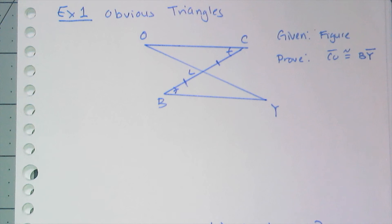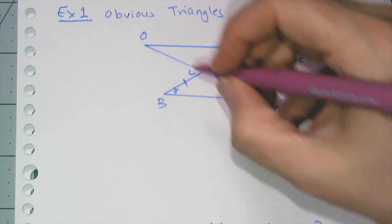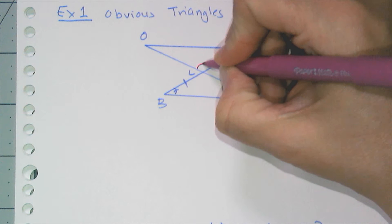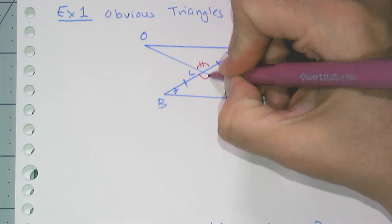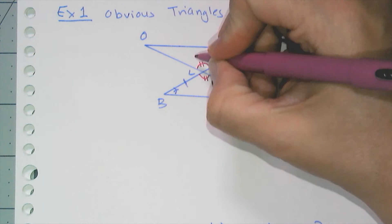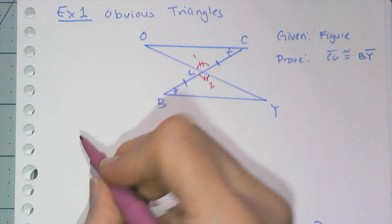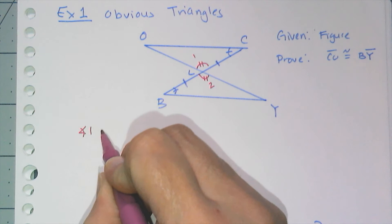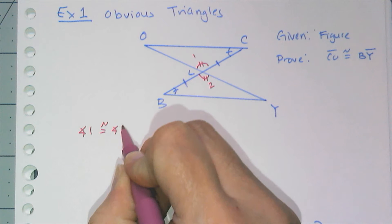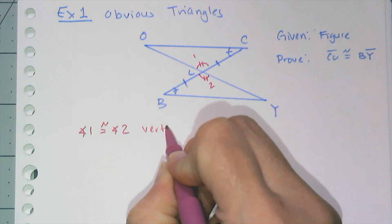You'll notice that I have vertical angles, which is one of those things you just kind of immediately want to look at and acknowledge. So I know this angle, and I'm going to number them—one and two. I know that angle 1 is congruent to angle 2 because they are vertical angles.